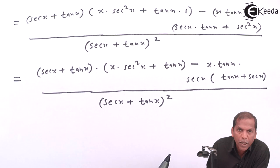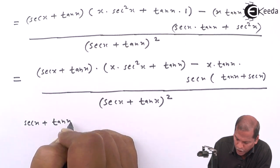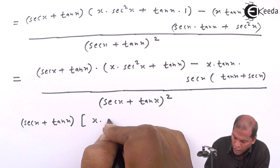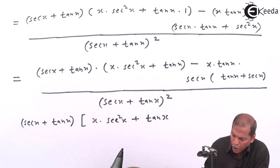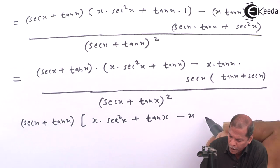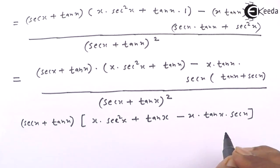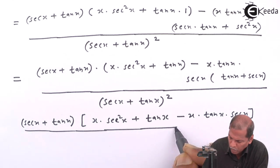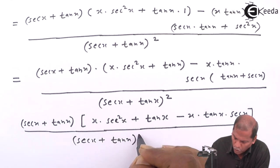Now from these two terms we take sec(x) plus tan(x) common throughout, so we get sec(x) plus tan(x) in one bracket, and the remaining terms: x times sec²(x) plus tan(x), minus x times tan(x) times sec(x), plus tan(x). The square bracket is completed, and the whole thing is divided by sec(x) plus tan(x), whole bracket squared.